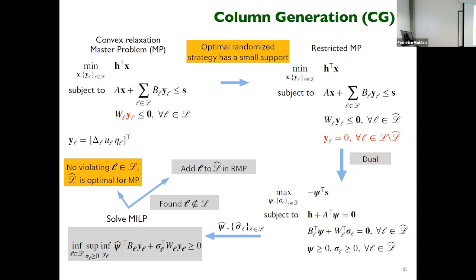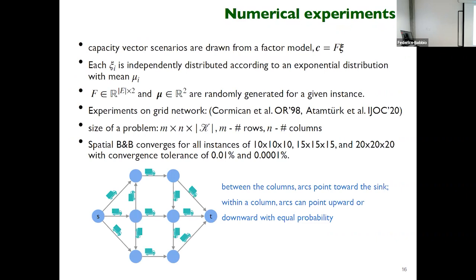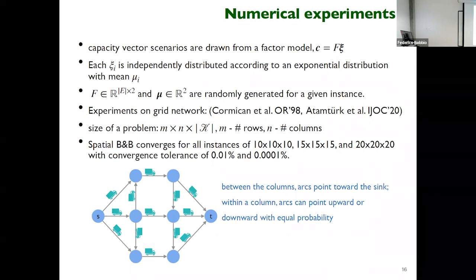For the numerical experiments, capacity scenarios were generated using a factor model where c are the capacities, f are the factors, and psi_i is independently distributed according to an exponential distribution with mean mu_i; f and mu are randomly generated per instance. Experiments were conducted on a grid network standard in the network interdiction literature. Between columns, arcs point toward the sink direction; within a column, arcs point upward or downward with equal probability. The size is given by m × n × K, where m is rows and n is columns. The spatial branch-and-bound converges for all instances of size 10 × 10 × 10, 15 × 15, and 20 × 20.